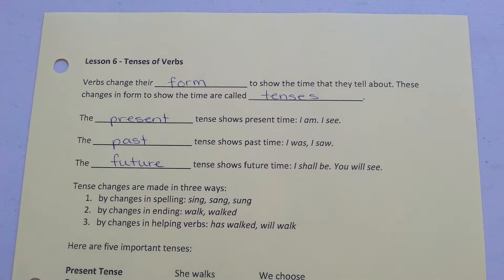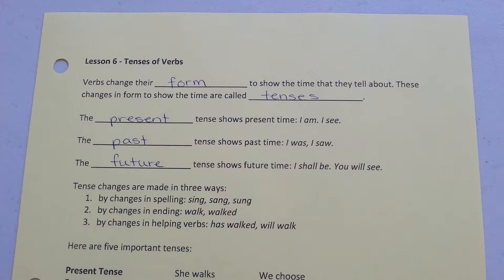Tense changes are made in three ways. First, by change in spelling: sing, saying, sung. Second, by changes in ending: walk becomes walked. And three, by changes in helping verbs: has walked, will walk.